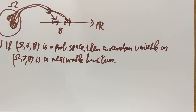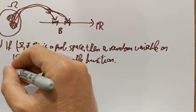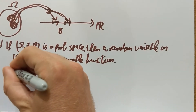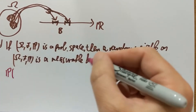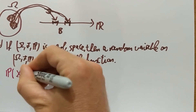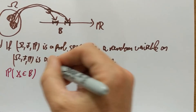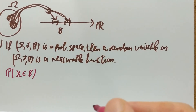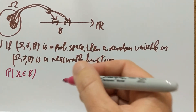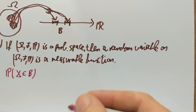Assume that you have a random variable as in this setup, and you want to ask the following question: what is the probability that my random variable belongs to a certain set? This set, of course, needs to be measurable in the Borel sigma-algebra. These are the questions you can ask.